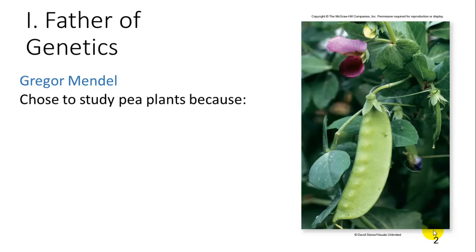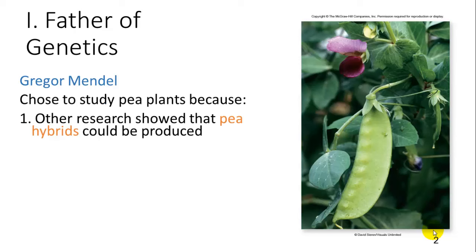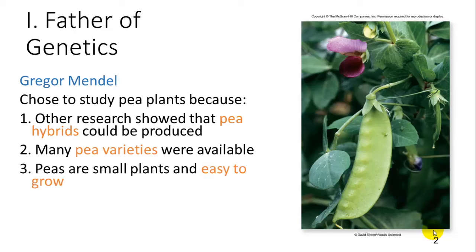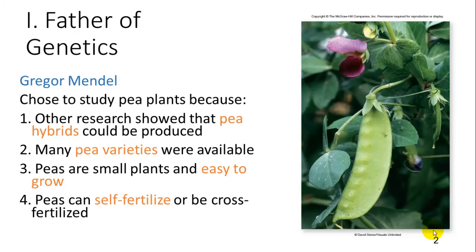The reason why he chose pea plants is because other research showed that peas could make hybrids, so you could cross different types of peas. There were lots of different pea varieties available. They were easy to grow and they can self or cross fertilize. You can take a flower and fertilize another flower on the same plant, or take the stamens off, which hold the pollen and sperm, to make sure self-fertilization doesn't occur, and then cross it with another plant.